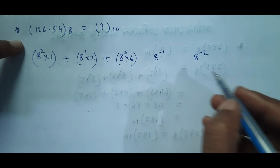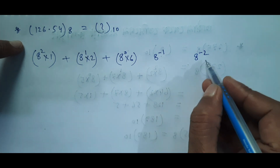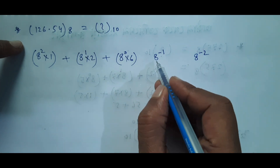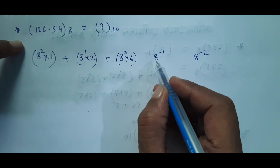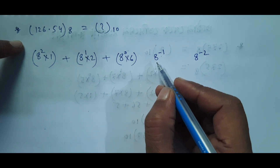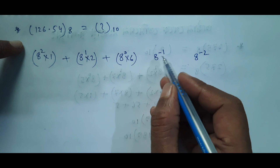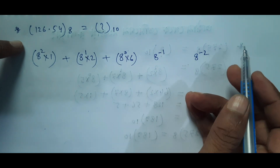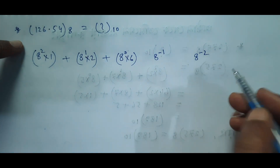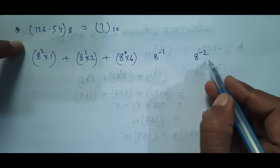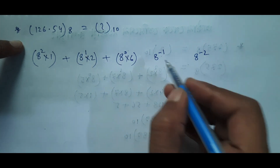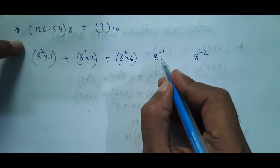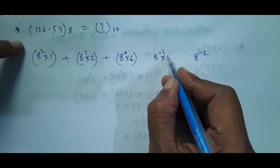So we have two times. We have to take 8 to the power minus 1, minus 2, and 8 to the power minus 3. We have to take this one more. This is equal to 5.